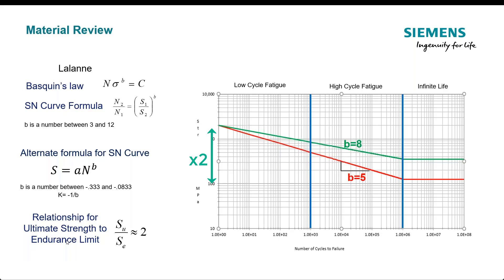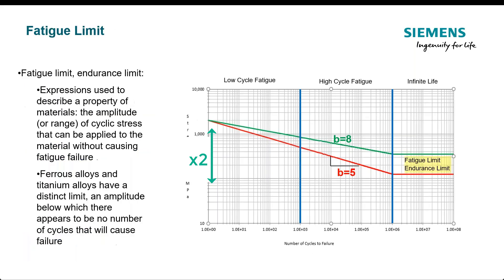Typical rule of thumb we always want to keep in mind is the ultimate endurance limit are off by a factor of two on steels. It's important whenever you think about increasing the amplitude. I can run this test faster by increasing the amplitude. Please keep this in mind. You're raising the amplitude by 1.1 or 1.2%.